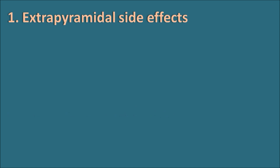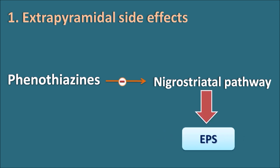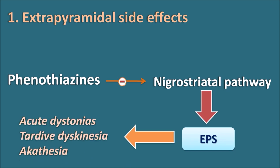Phenothiazines act as antagonists on the dopamine receptors present on the nigrostriatal pathway, thereby producing motor disturbances like extrapyramidal side effects. These extrapyramidal side effects include acute dystonias, tardive dyskinesia, and akathisia.